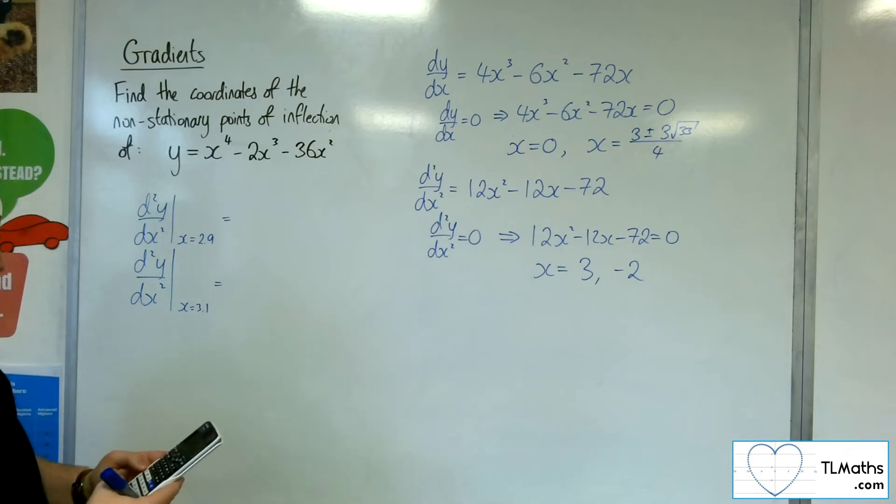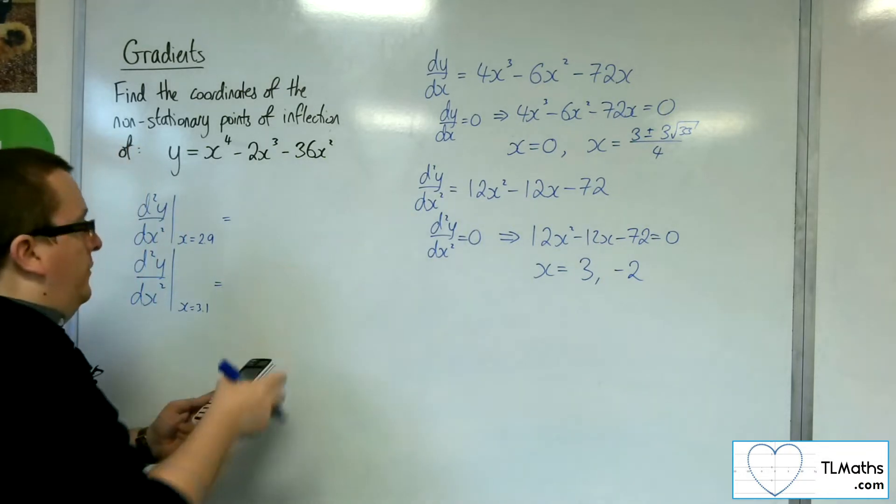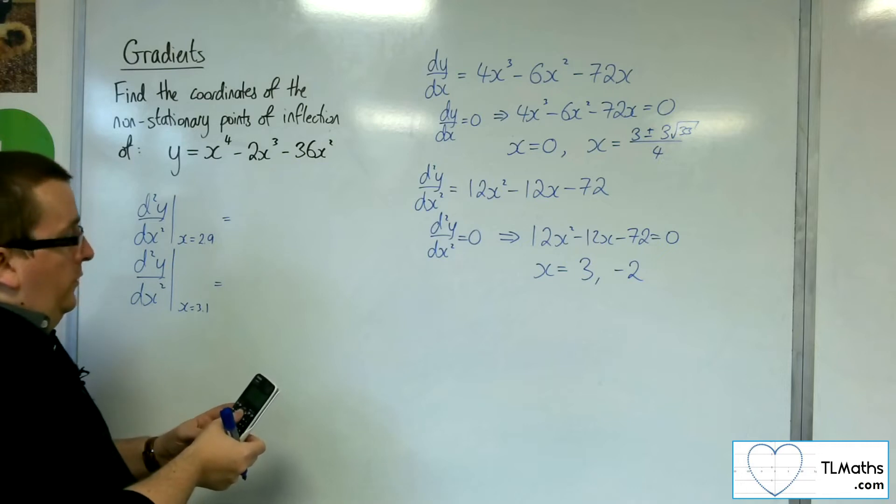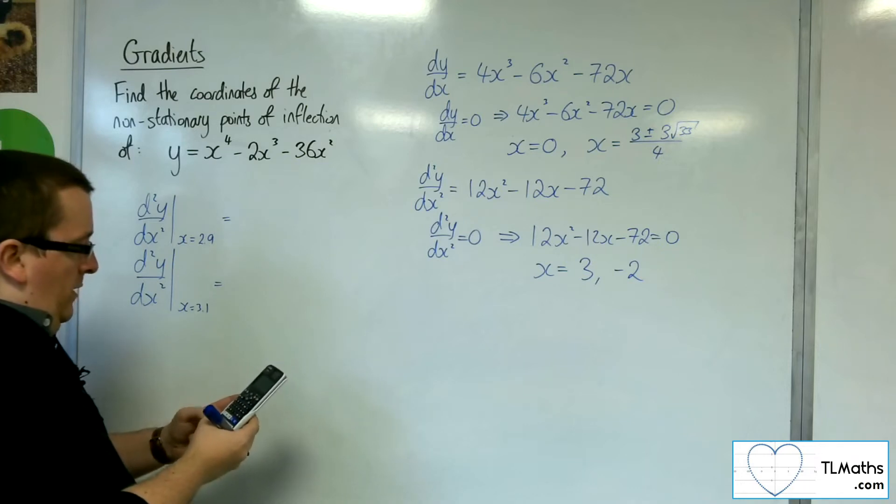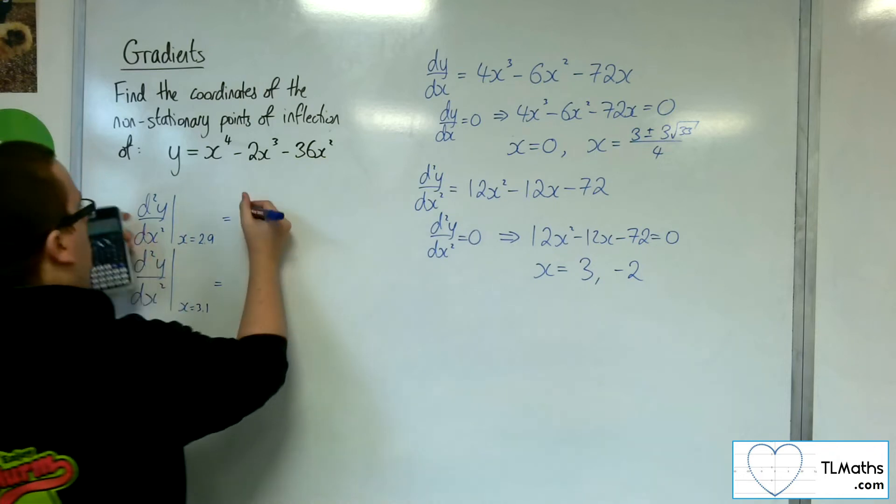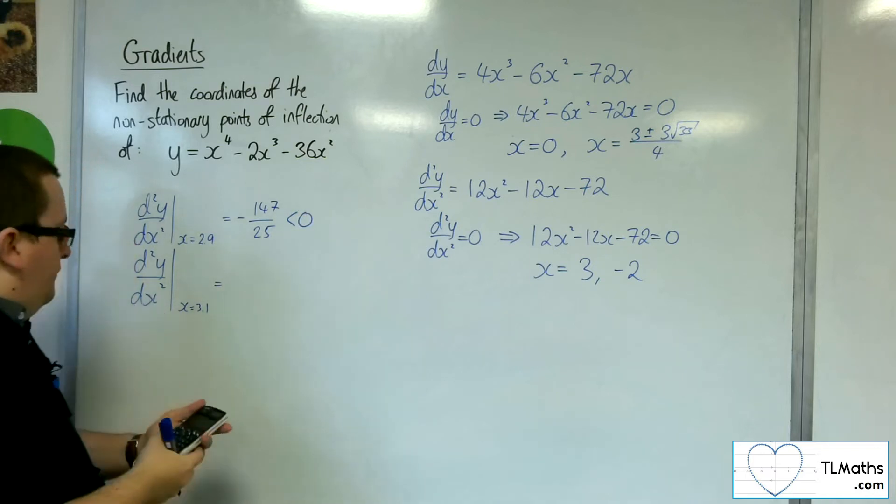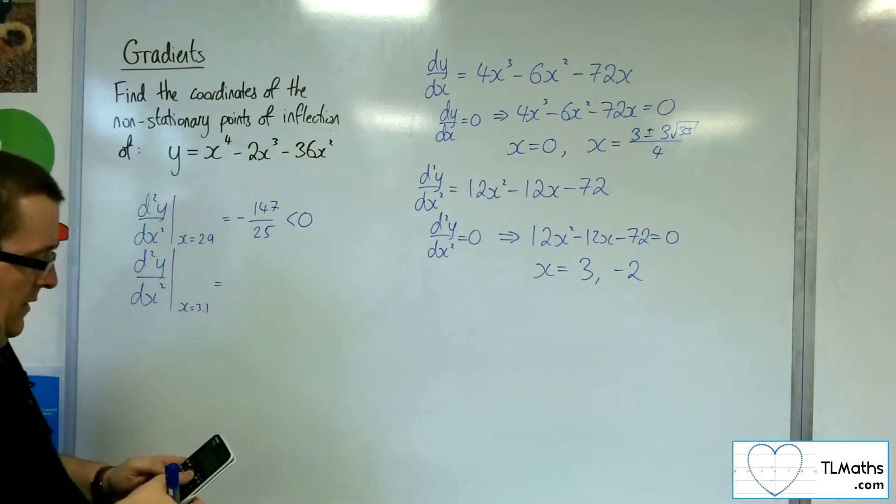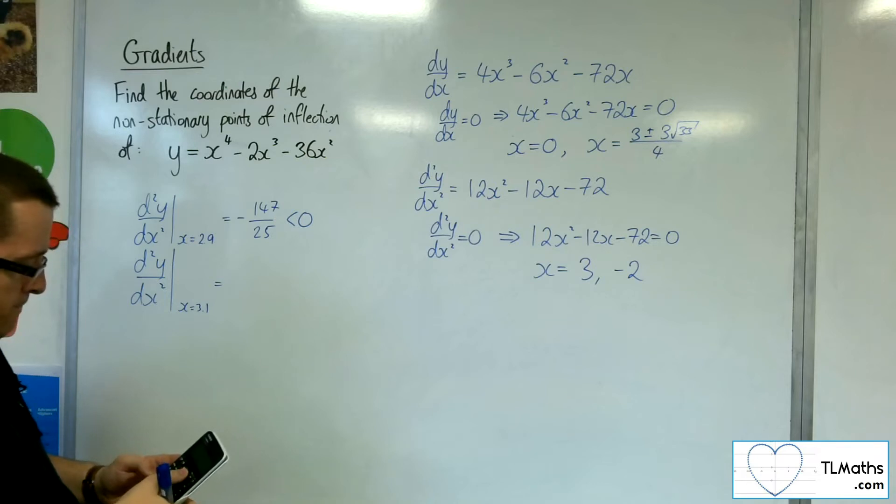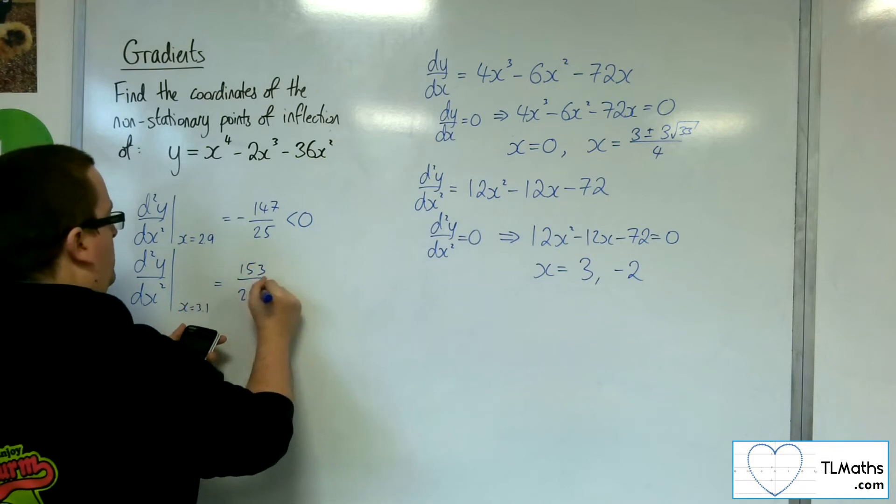So 2.9, so we've got 12 lots of 2.9 squared, take away 12 lots of 2.9, take away 72. So that's minus 147 over 25, and so we've got a negative value. And substituting in 3.1, we get 153 over 25, which is positive.